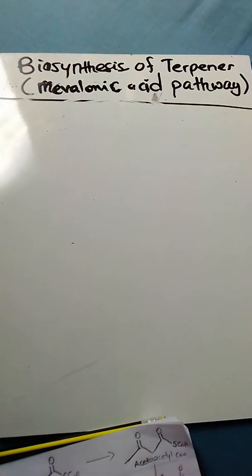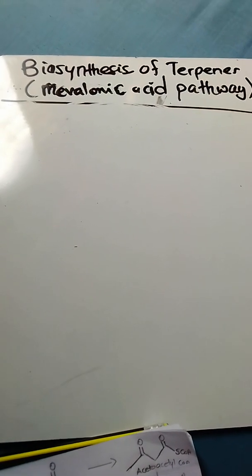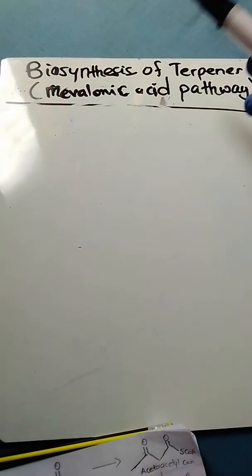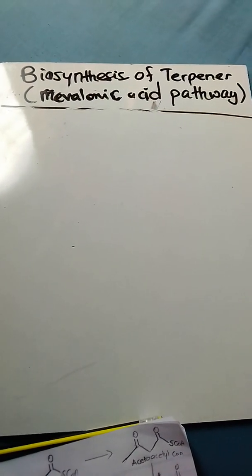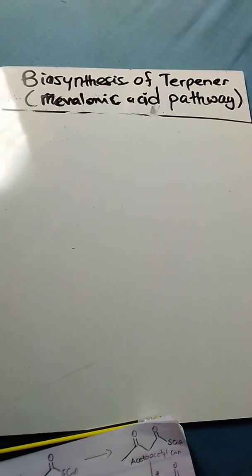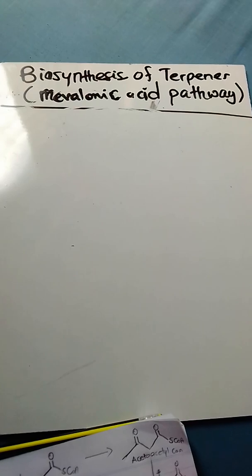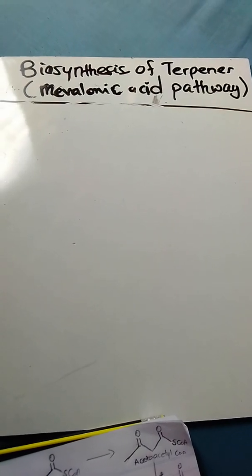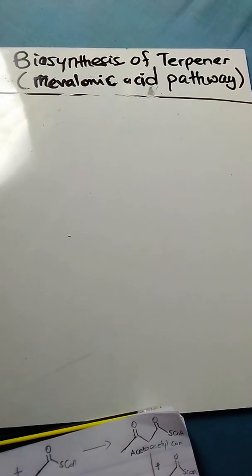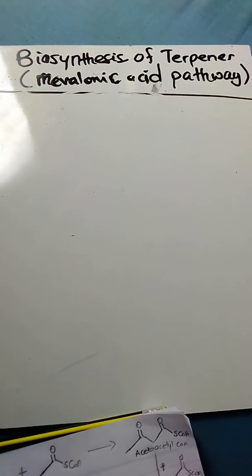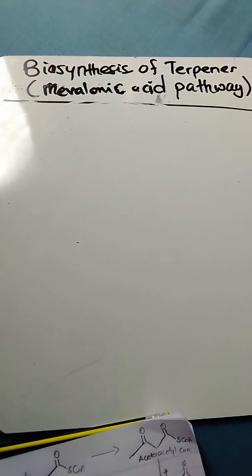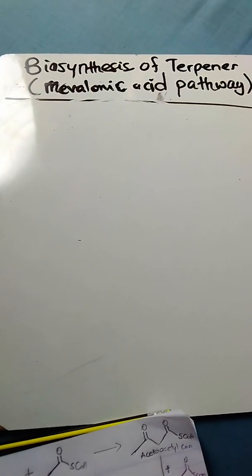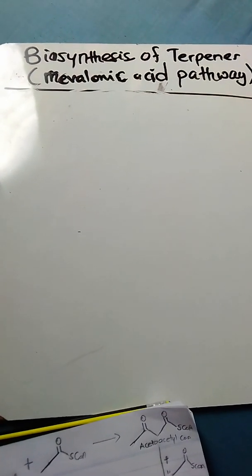Plants basically synthesize terpenes through two main pathways. One is the mevalonic acid pathway and the other one is the MEP pathway. The MEP pathway uses pyruvic acid and phosphoglycerate as precursors, whereas the mevalonic acid pathway uses acetyl-CoA molecules as precursors to manufacture terpenes. Now today we are going to center more on the mevalonic acid pathway.